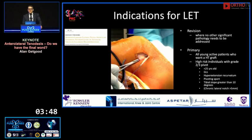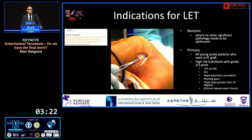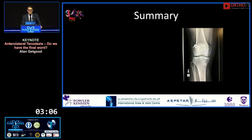My current indications for LET: I add it in the majority of revisions and in the primary setting for pretty much all young active patients wanting a hamstring tendon graft. If they're young, returning to sport, and want a hamstring for some reason, they get a lateral tenodesis. For those choosing patella or quadriceps tendon, I look for extra risk factors such as generalized ligamentous laxity, hyperextension recurvatum, pivoting sports, tibial slope — a massive predictor — and chronic lateral notch, which also plays a role in high-grade rotatory laxity.